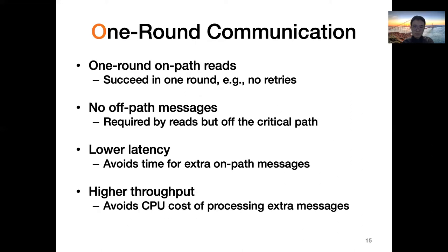The O property captures the minimum possible extra messages — no extra messages. It requires that read-only transactions use only one round of on-path messages. This disallows other messages that are on-path for read-only transactions, such as retries, and also disallows off-path messages that are only required for reads but lie off their critical paths. One-round read-only transactions have better performance than those with more messages: lower latency because they avoid time spent sending, receiving, and waiting on extra messages, and higher throughput because they avoid the CPU overhead of processing extra messages.